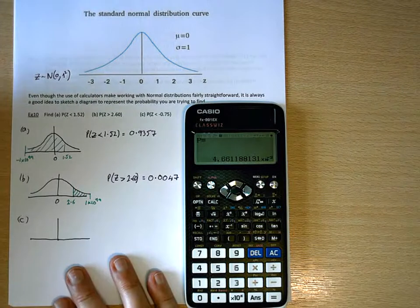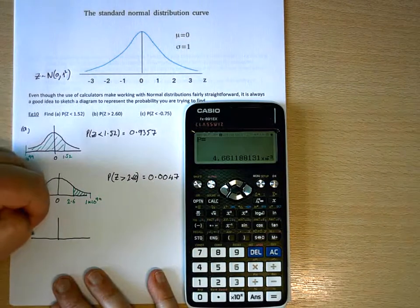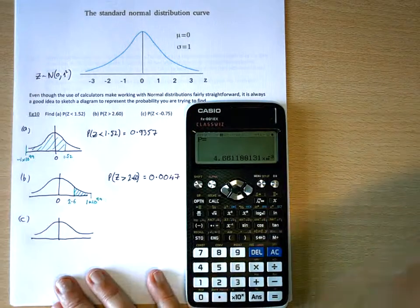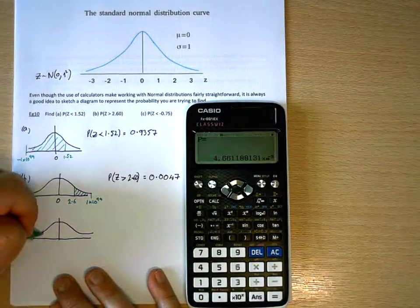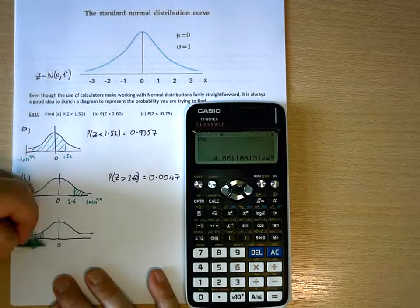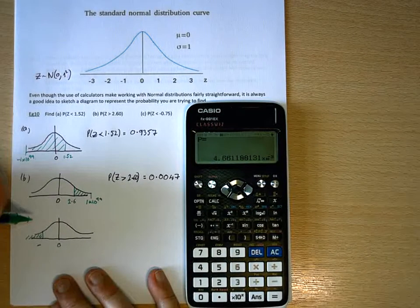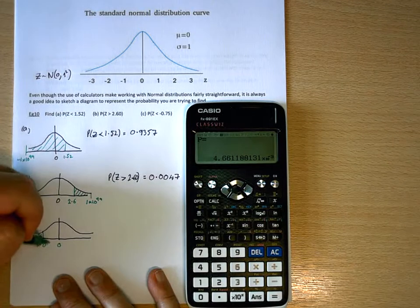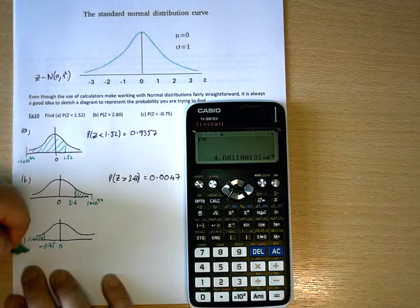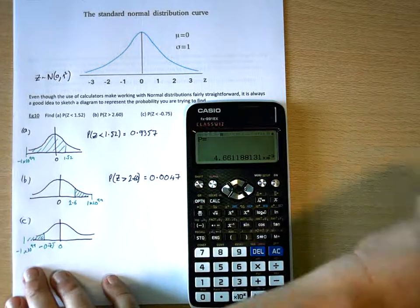Z is less than negative 0.75. So this time, we have this side of the curve. So minus 0.75, my lower limit, would be negative 1 times 10 to the 99.